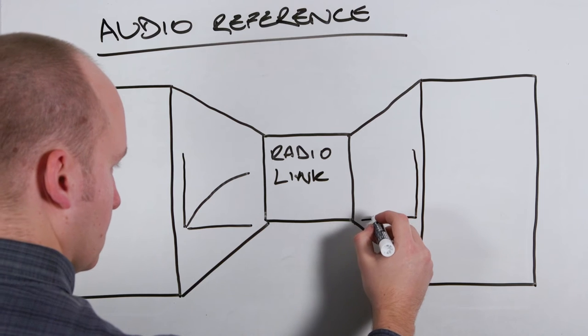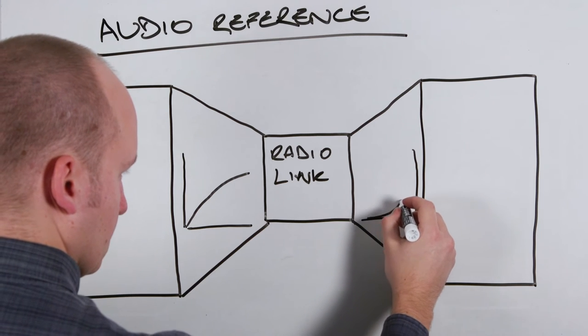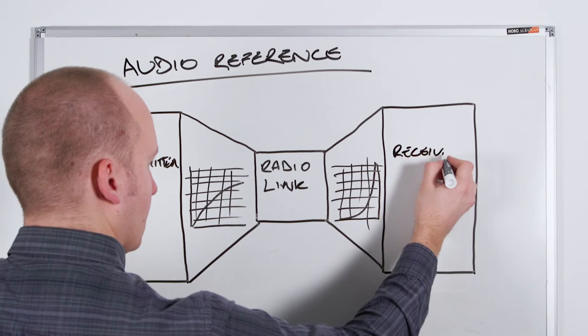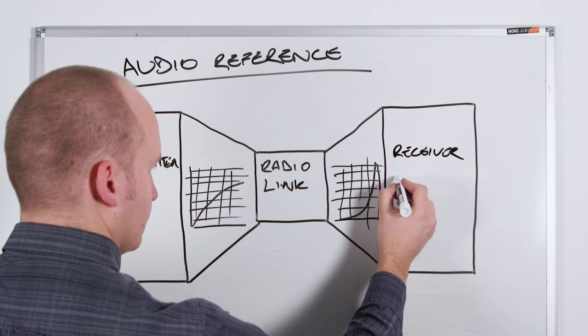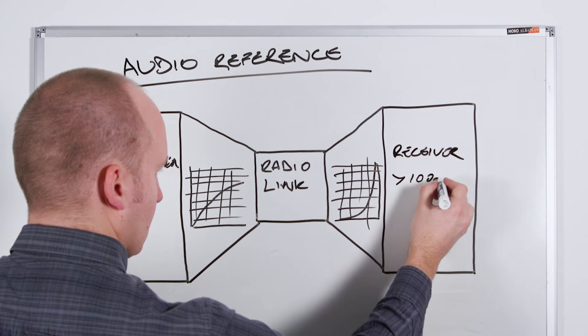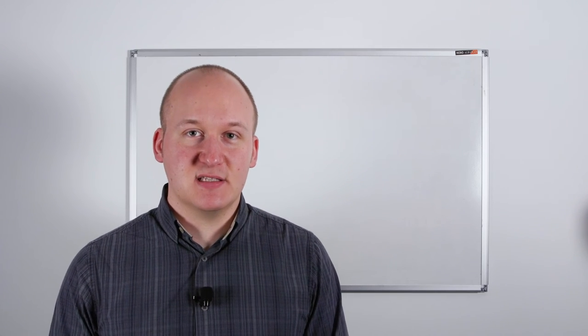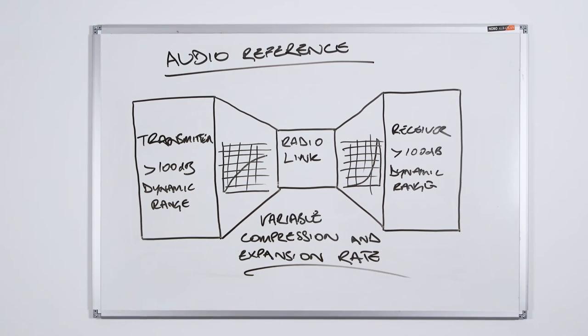Audio reference companding on the other hand is a level dependent companding scheme, so it operates on the principle that it will only compress the signal if it's absolutely necessary. This means that at low signal levels you don't get any of those artifacts that you sometimes experience with fixed ratio companding schemes. The way audio reference companding works is it utilizes a soft knee type of compression which brings the onset of compression on gradually and it allows the wireless system to avoid companding until it's absolutely necessary.